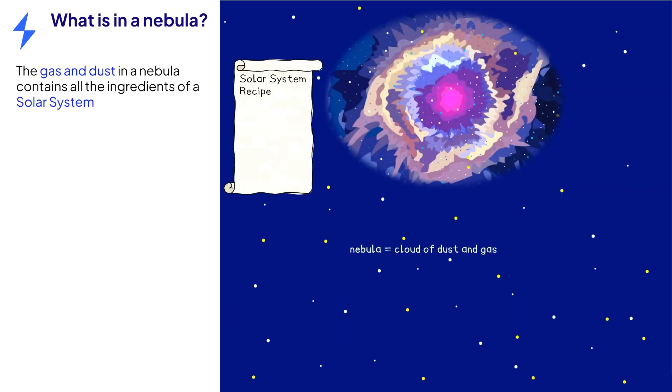To make a solar system, we need three main items: a cloud of dust and gas rich in elements, gravitational forces to pull matter together, and a rotating accretion disk.